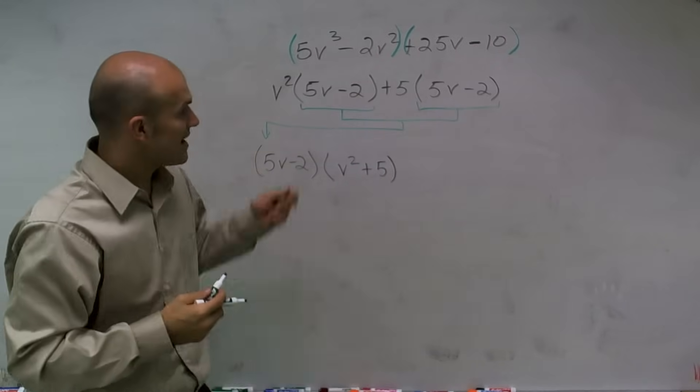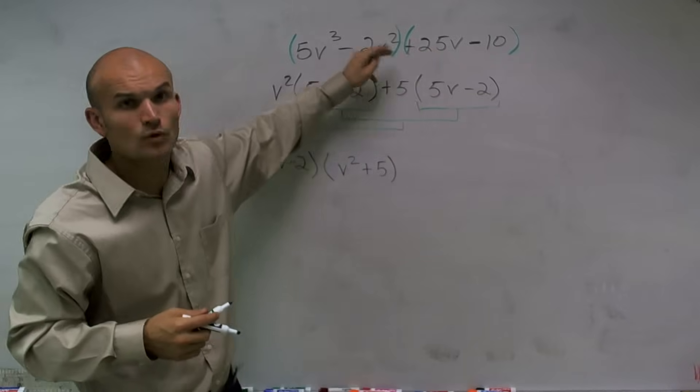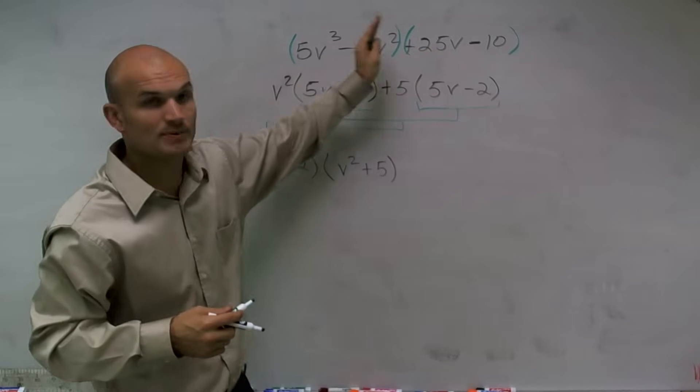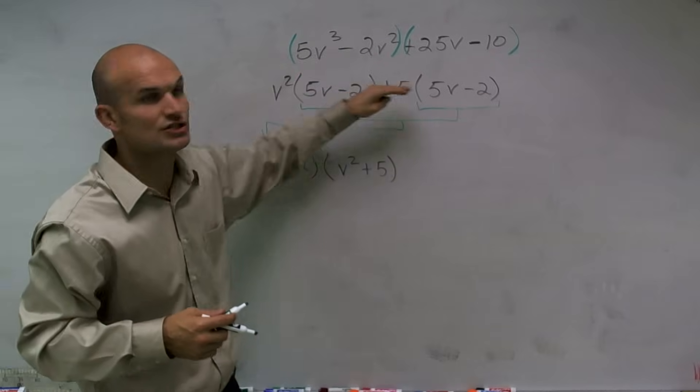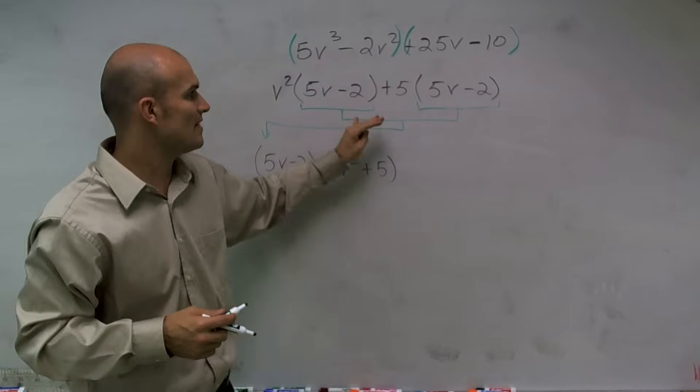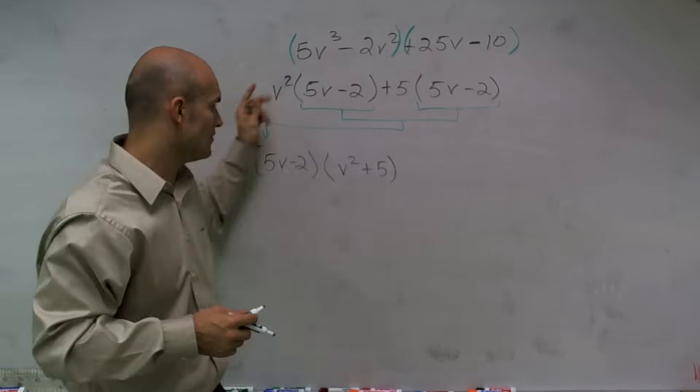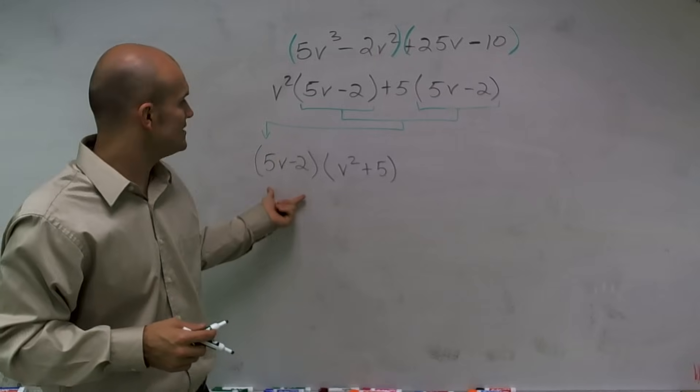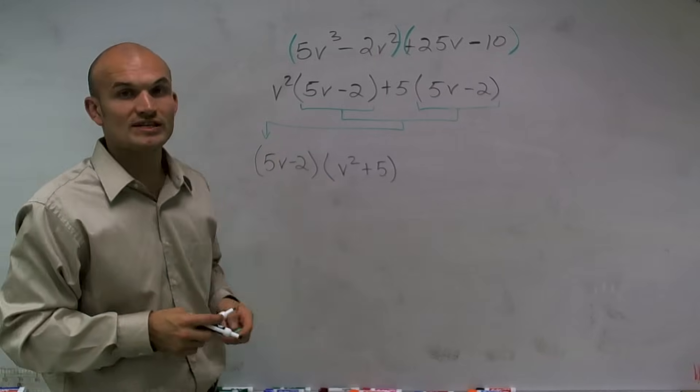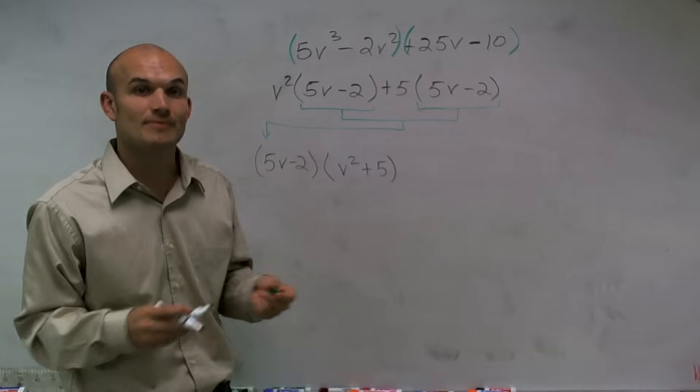Therefore, to factor by grouping, when you have four terms, I group the first two terms, I factor the GCF out of both of those terms. Then I factor out that term out, and I'm left with 5v minus 2 times v squared plus 5. And that is how you factor by grouping.